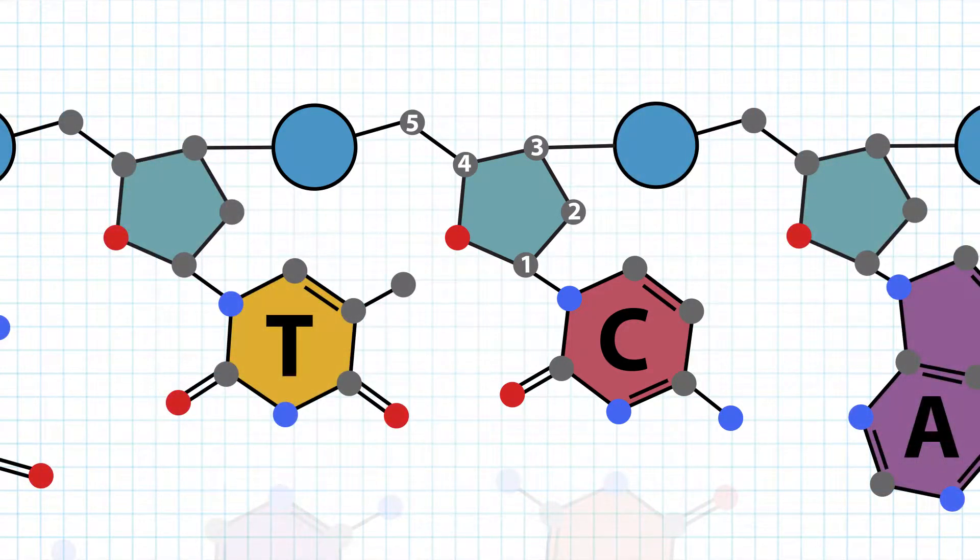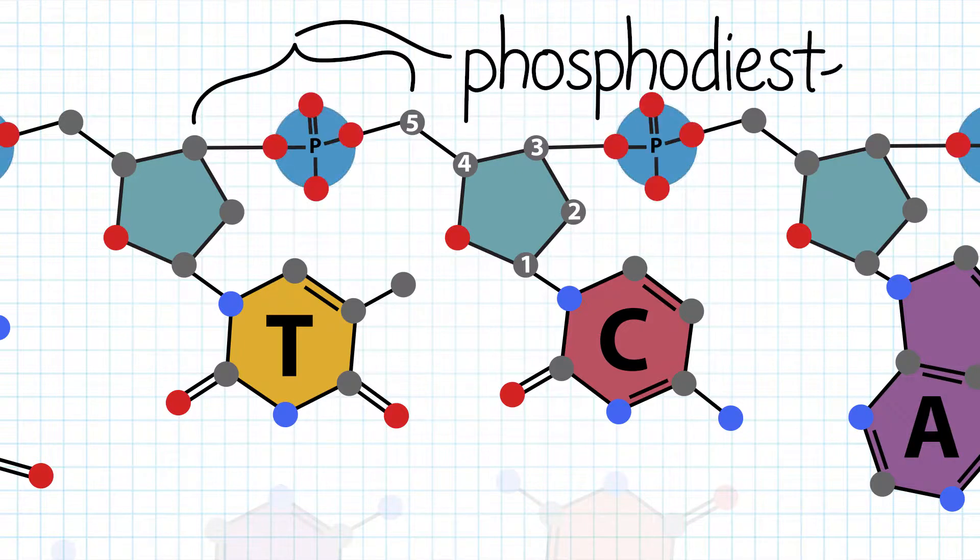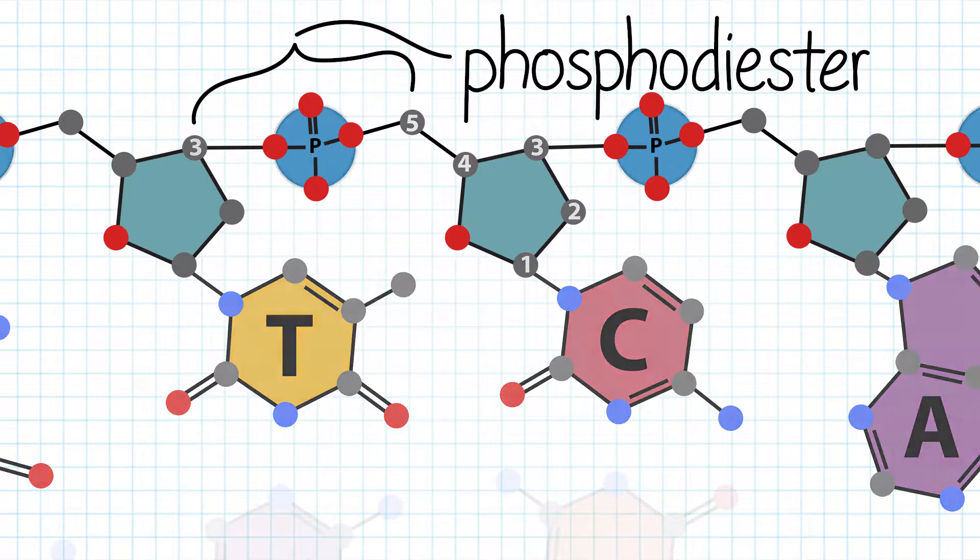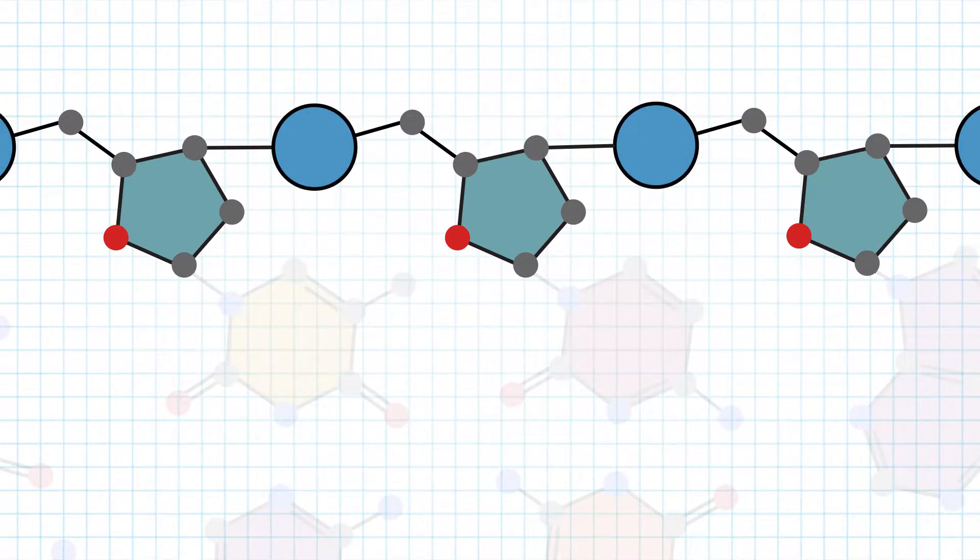Nucleotides attach to each other in the DNA strand by phosphodiester bonds. The phosphate group of one nucleotide binds to the 3' oxygen of the neighboring nucleotide. Thus, we can see that the sugars and phosphate groups make up the DNA backbone.